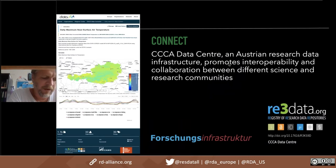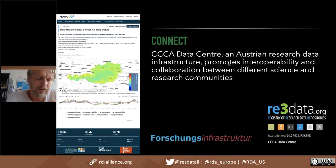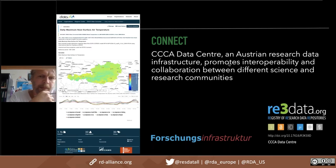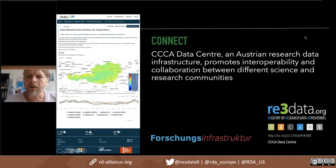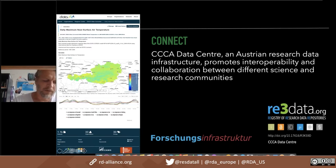CCA, as Marike mentioned, stands for Climate Change Center Austria. The CCA is a non-profit association for Austrian research institutions and universities which deals within the scientific domain of climate change. One department of CCA is a data center, part of the Austrian research data infrastructure, established in 2015. We promote interoperability in the technical sense regarding FAIR data principles, but also other standards like ISO and OGC, and with our services we want to support collaboration between different scientific and research communities.